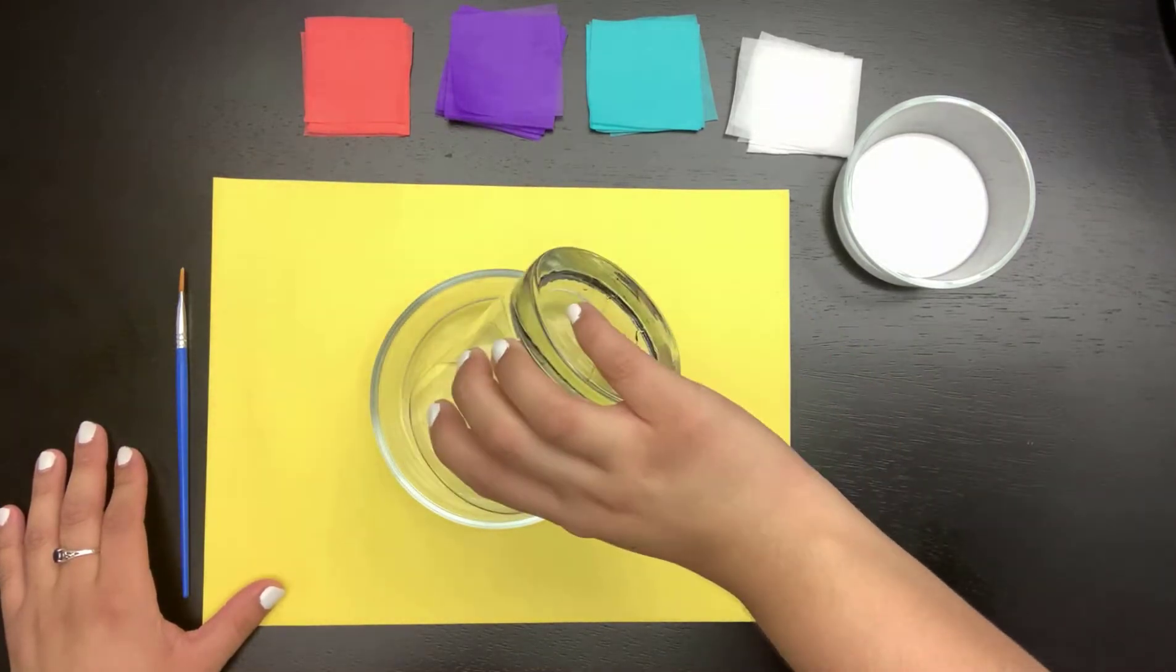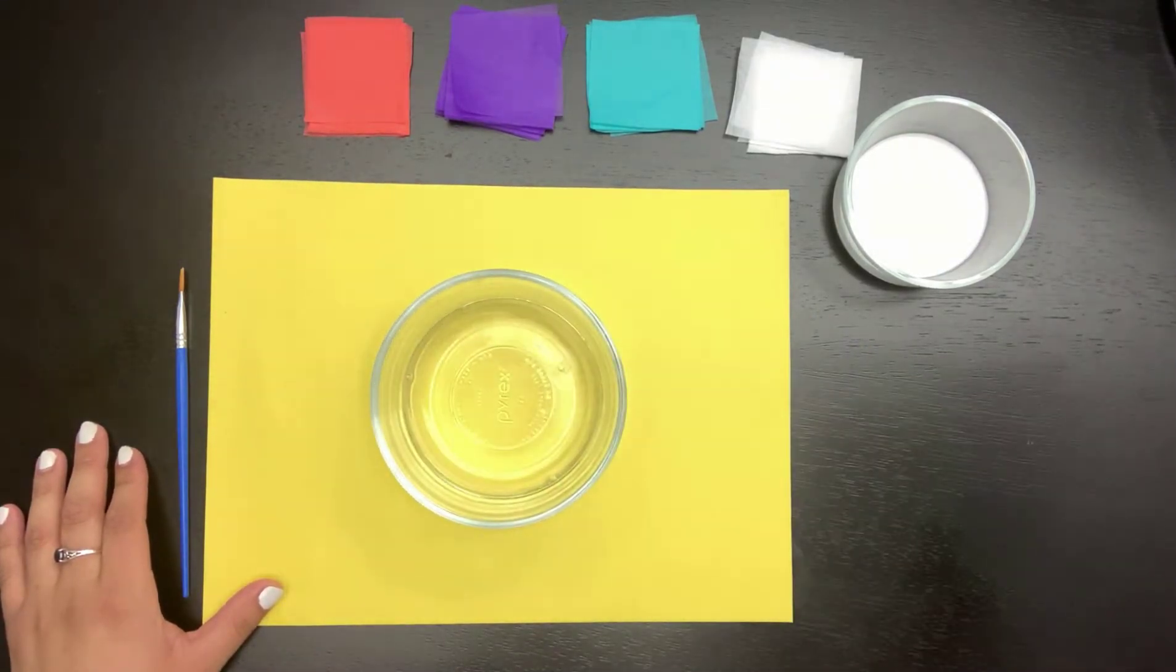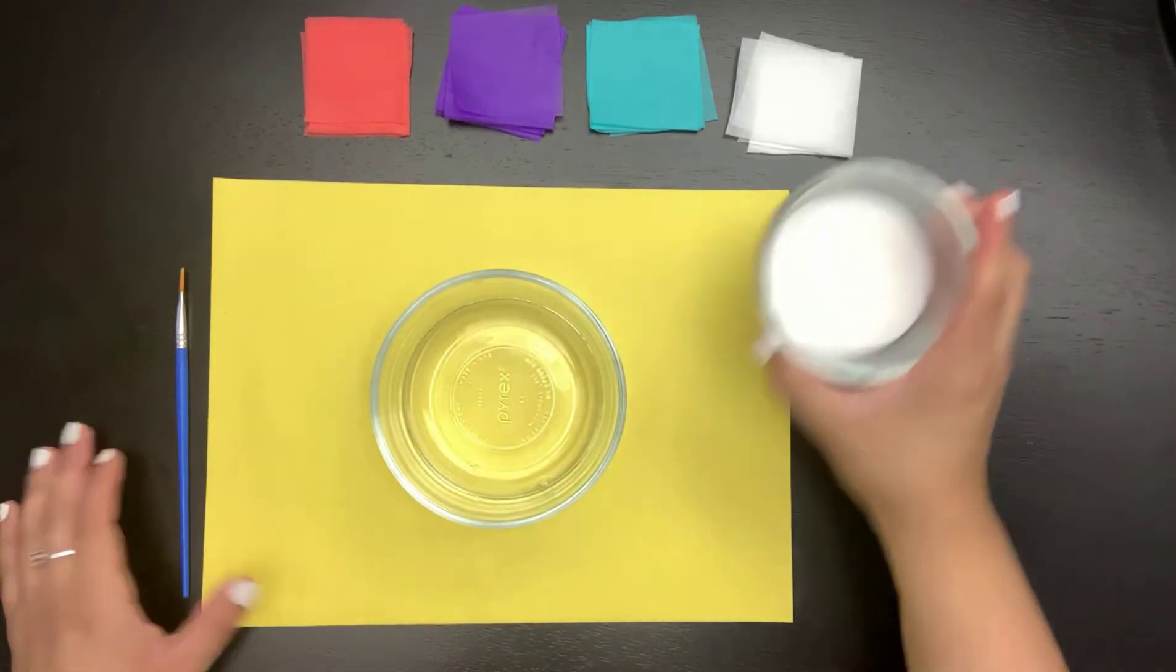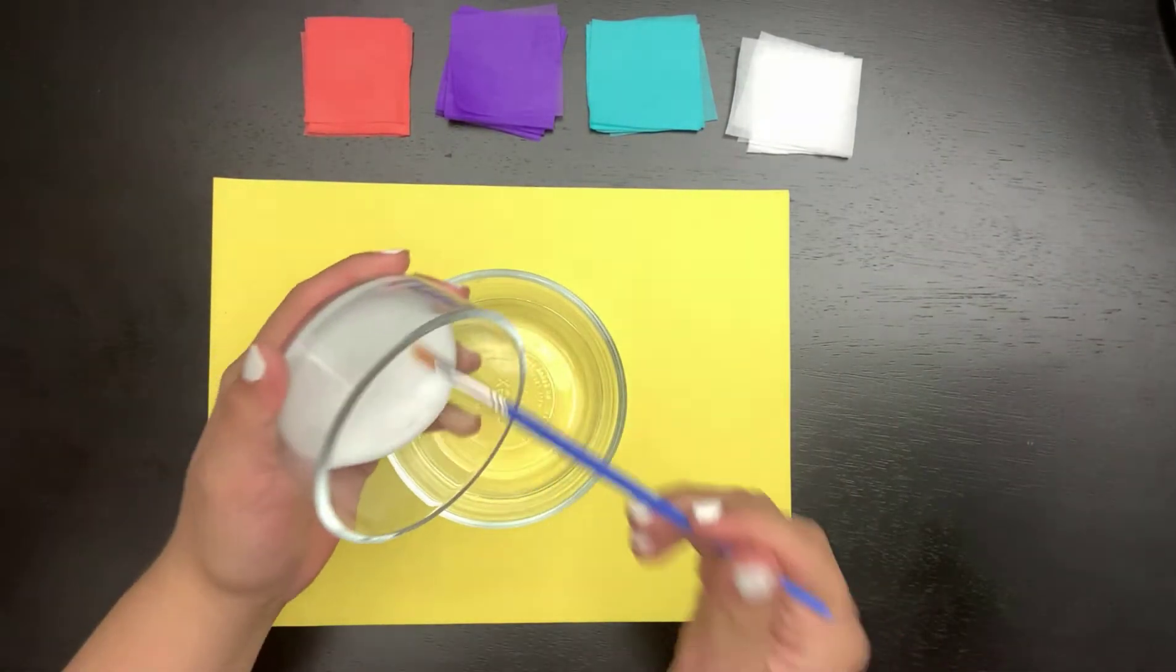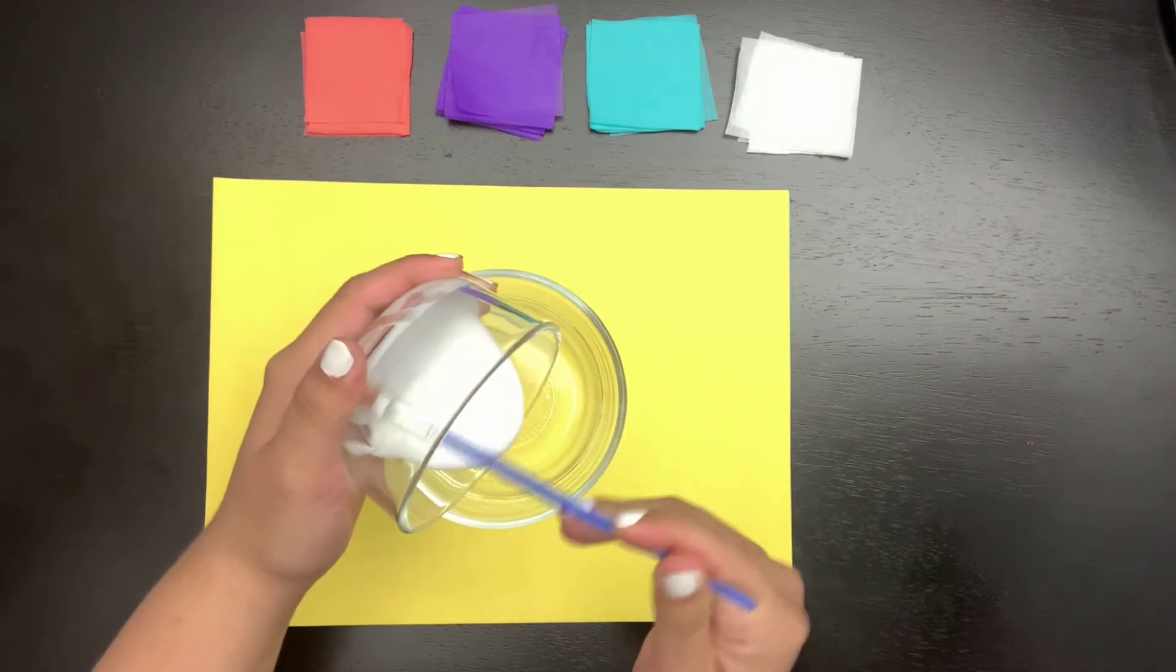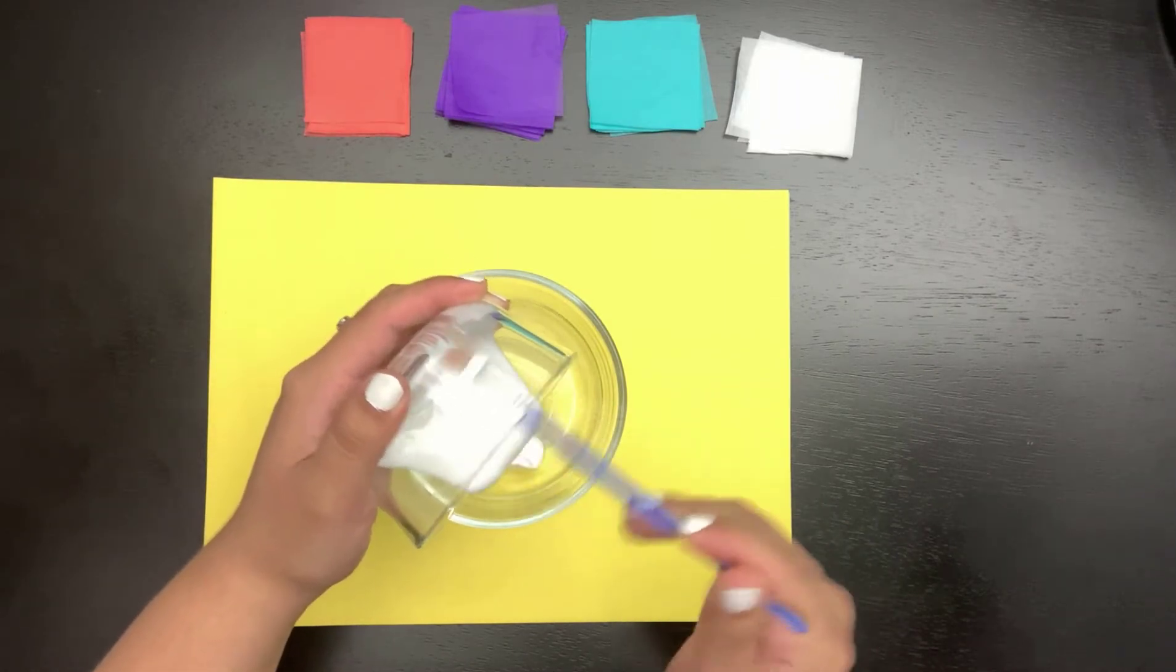First we will pour in our half cup of warm water. Next we will add our glue and I like to use my paintbrush to make sure that I can get all the glue out as possible.